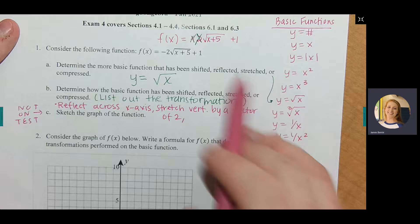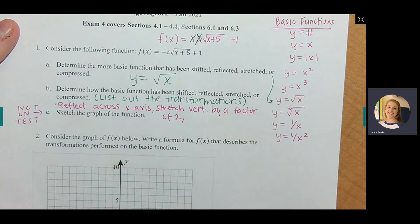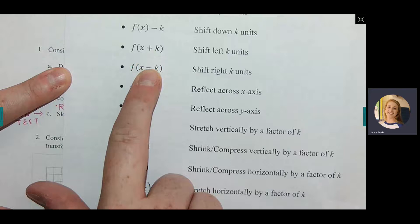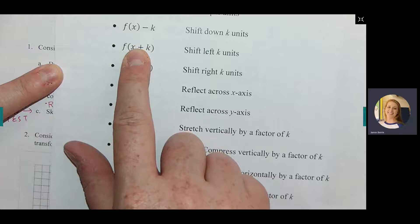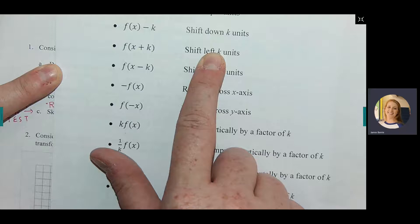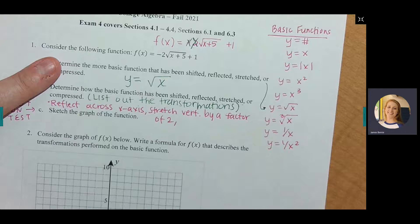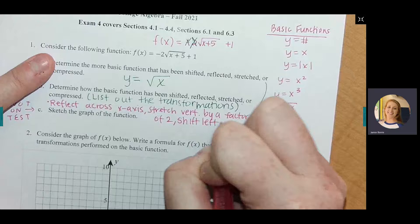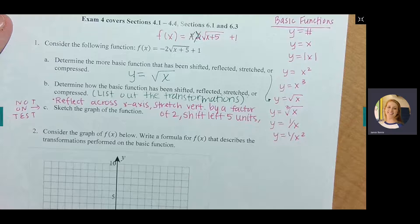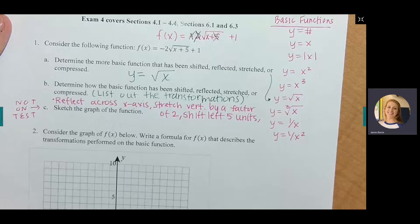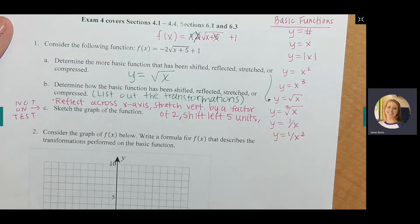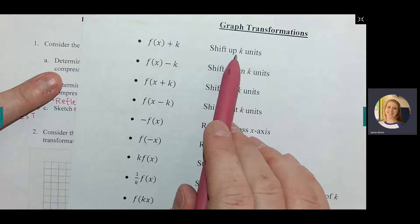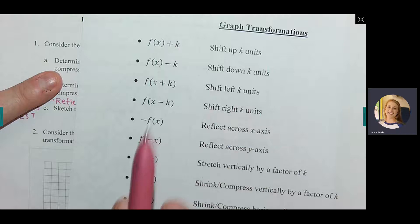Now we're inside the radical, where we're adding 5. Looking at the transformation sheet, adding a number inside the parentheses means shifting left by that amount — so shift left 5 units. Then we're back on the outside at the plus 1. A number added on the outside means shift up — so shift up 1 unit.